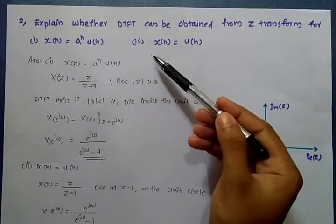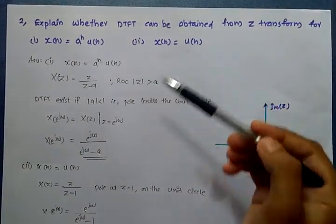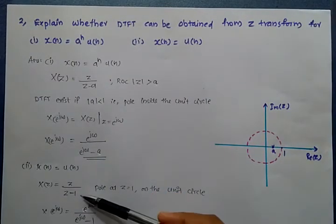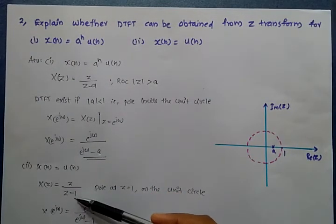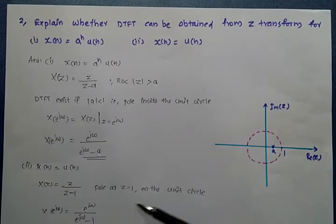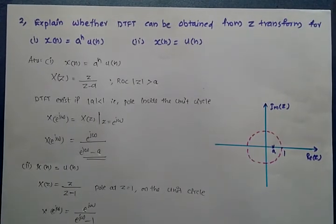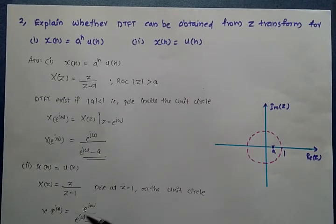For the second case, x(n) = u(n), the Z-transform of u(n) is Z divided by (Z minus 1), and the pole is at Z = 1, which lies on the unit circle. We can still find the DTFT from the Z-transform, giving: X(e^{j omega}) = e^{j omega} divided by (e^{j omega} minus 1).